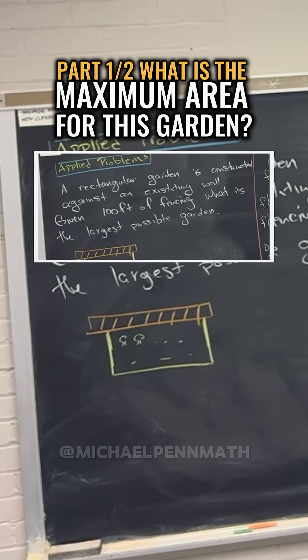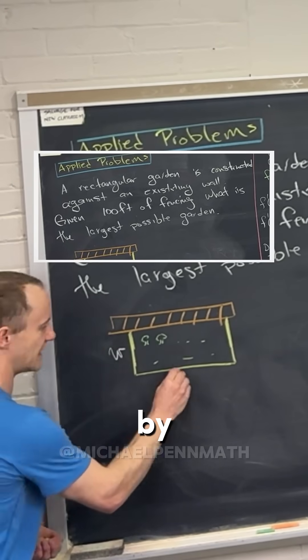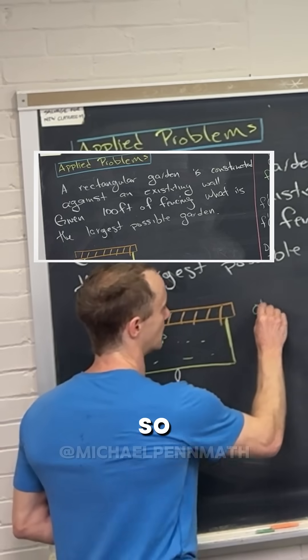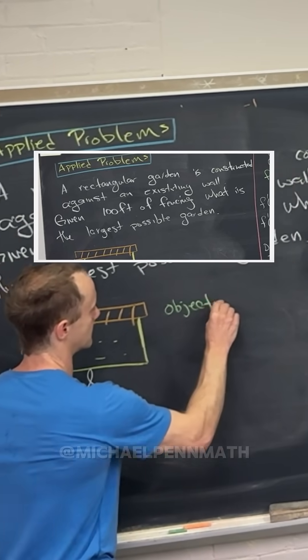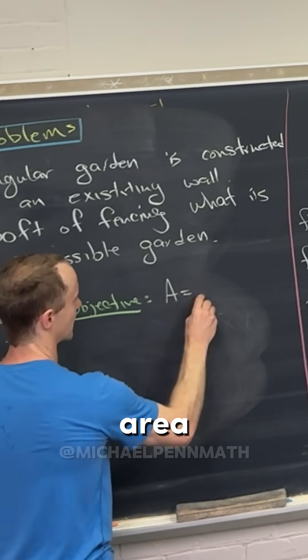If we want to maximize the area, that means we want to find the area by knowing the length and the width, right? And that immediately tells us our objective equation. So the objective, in this case, will be area because we're trying to maximize the area.